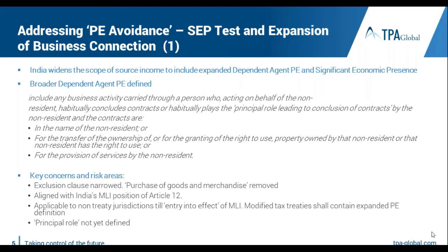Certain forms of activity — such as purchase of goods and merchandise — have been removed from the specific exclusions to the business connection rule, largely aligned to India's position in Article 12. This will apply to non-treaty jurisdictions until the MLI enters into effect. For non-residents with whom India has no double tax treaty, the amended provisions broad-basing the dependent agent PE definition will apply from this year itself.